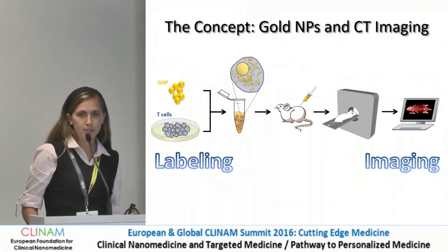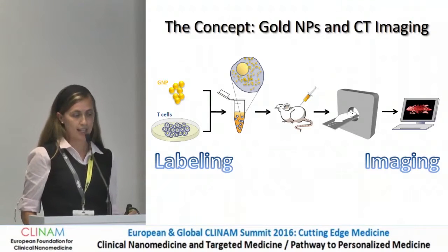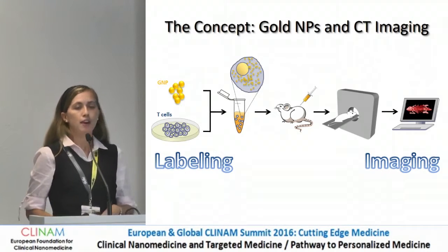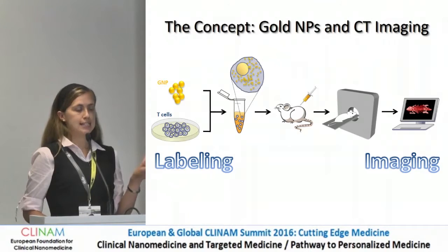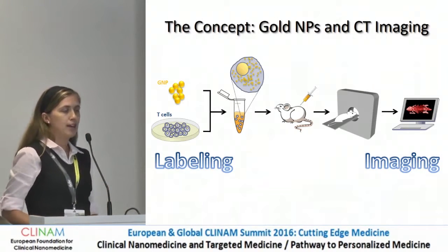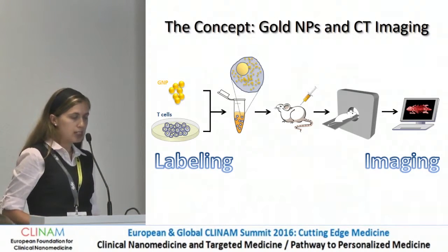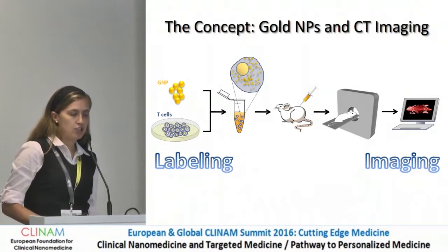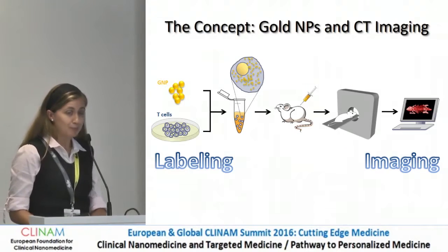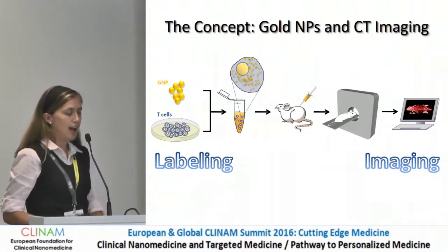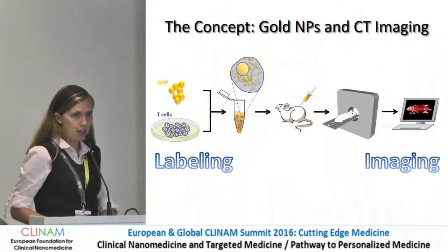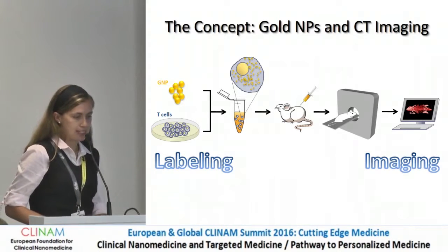In our lab, we developed a new technique for in vivo cell tracking. The concept is based on the combination of gold nanoparticles and CT imaging. First, the cells are labeled with gold nanoparticles, and only then are they injected into the mouse and imaged with CT. These labeled cells were IV-injected into tumor-bearing mice, and then we followed them using CT scan.